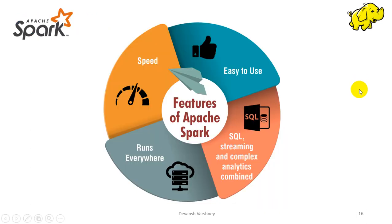Apache Spark is an open source framework for machine learning and stream processing based on in-memory technology for data processing. It provides programmers with data structures using in-memory technology and an application programming interface. The RDD (Resilient Distributed Dataset) is a read-only, distributed collection of data items spread over a cluster of machines with fault-tolerant features.